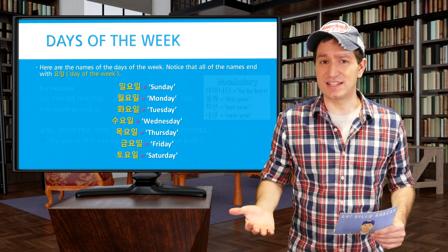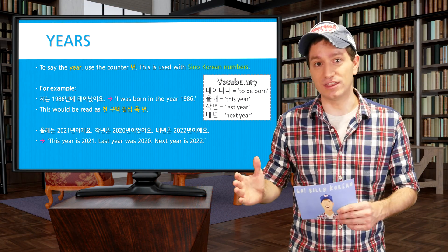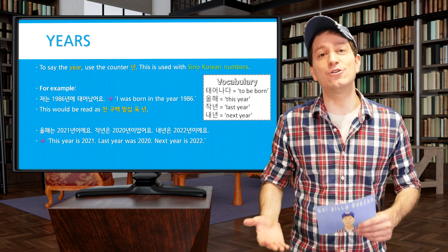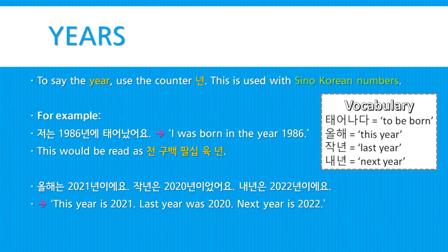To say what year it is, or to count years, use the counter 년, which is used together with Sino-Korean numbers. For example: 저는 천 구 백 팔십 육 년에 태어났어요 — I was born in the year 1986. 올해는 이천 이십 일 년이에요 — This year is 2021. 작년은 이천 이십 년이었어요 — Last year was 2020. 내년은 이천 이십 이 년이에요 — Next year is 2022.